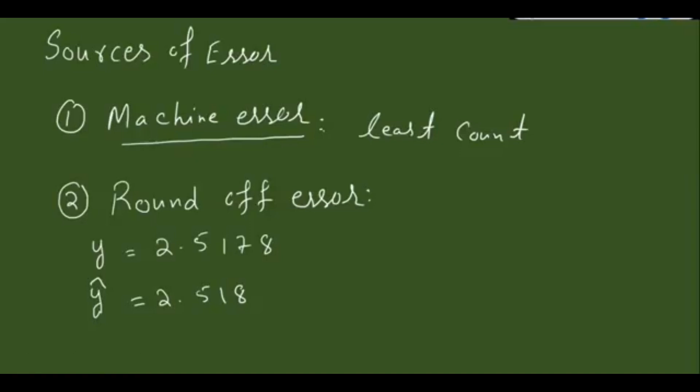Another example could be y = 2.5173, and the question is you still need three decimal places. You can replace this by ŷ = 2.517 by discarding the other term because the number is less than five. If you use this calculation, you're making an error because there is a difference between these two quantities.